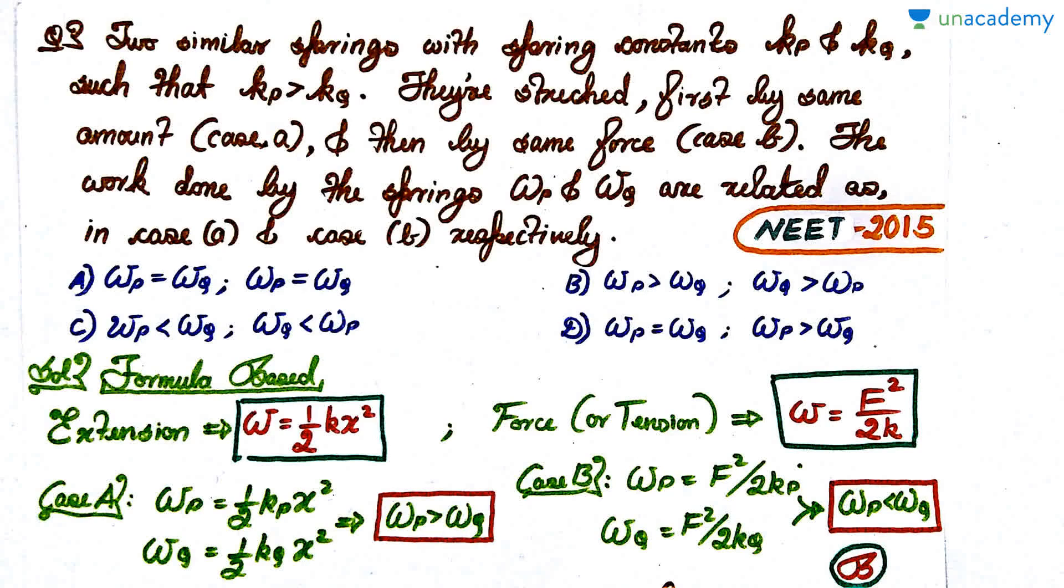Here, two similar springs with spring constants K_P and K_Q such that K_P is greater than K_Q. They are stretched first by the same amount, that's case A, and then by the same force, which is case B. The work done by the springs W_P and W_Q are related as in case A and case B respectively. These are the four options and you have to choose the correct one. Pause the video, attempt the question.